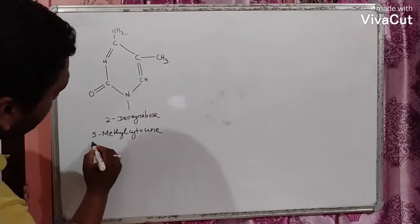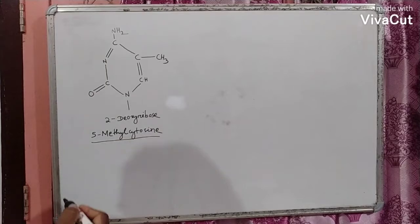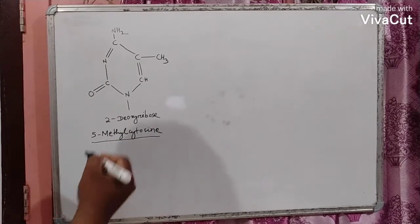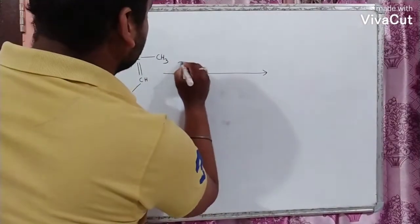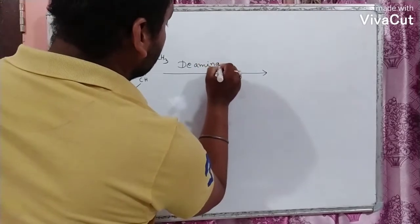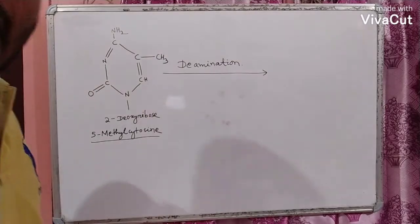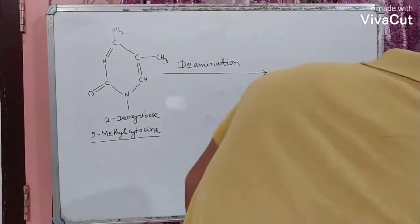This is 5-methyl cytosine. This 5-methyl cytosine during a spontaneous mutation process undergoes de-amination to produce a thymine and the structure of thymine is as follows.